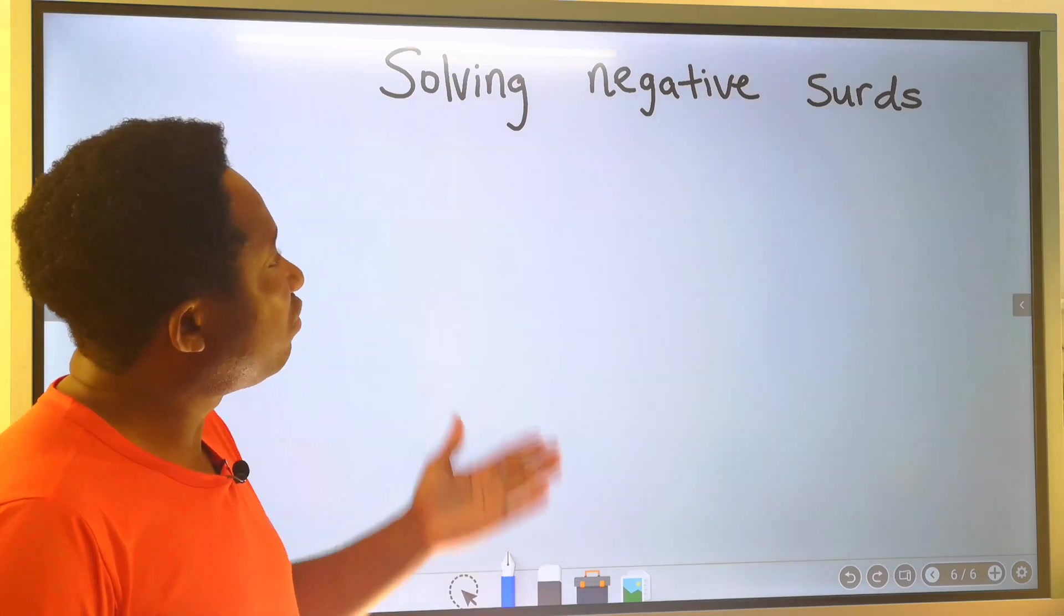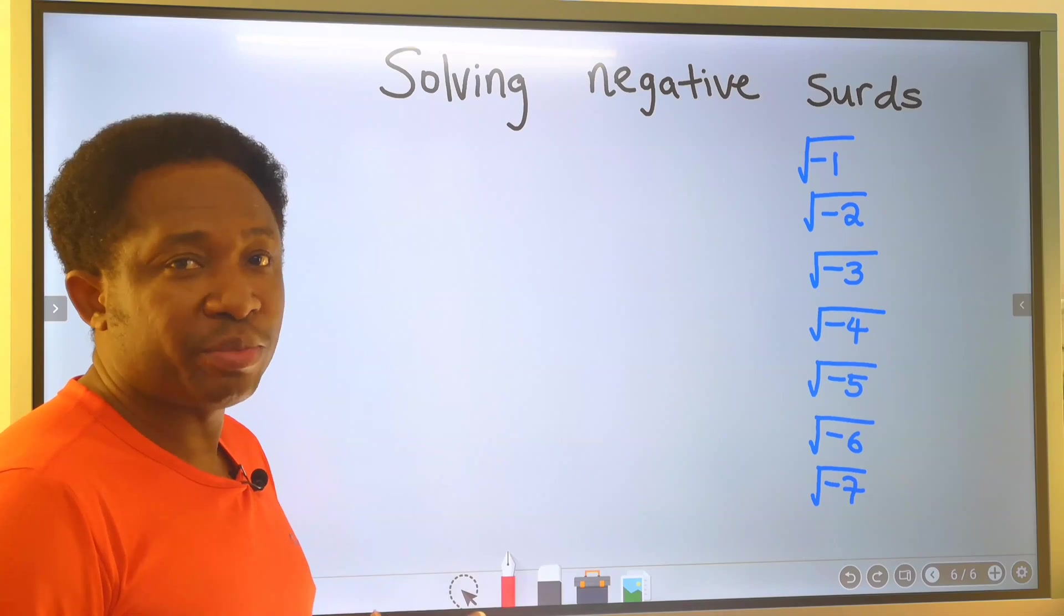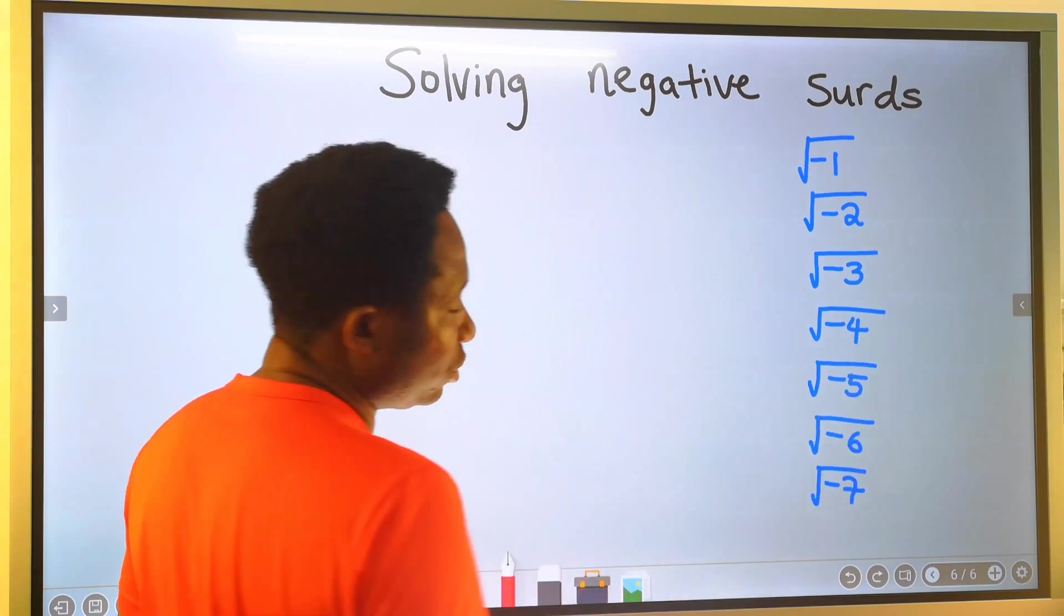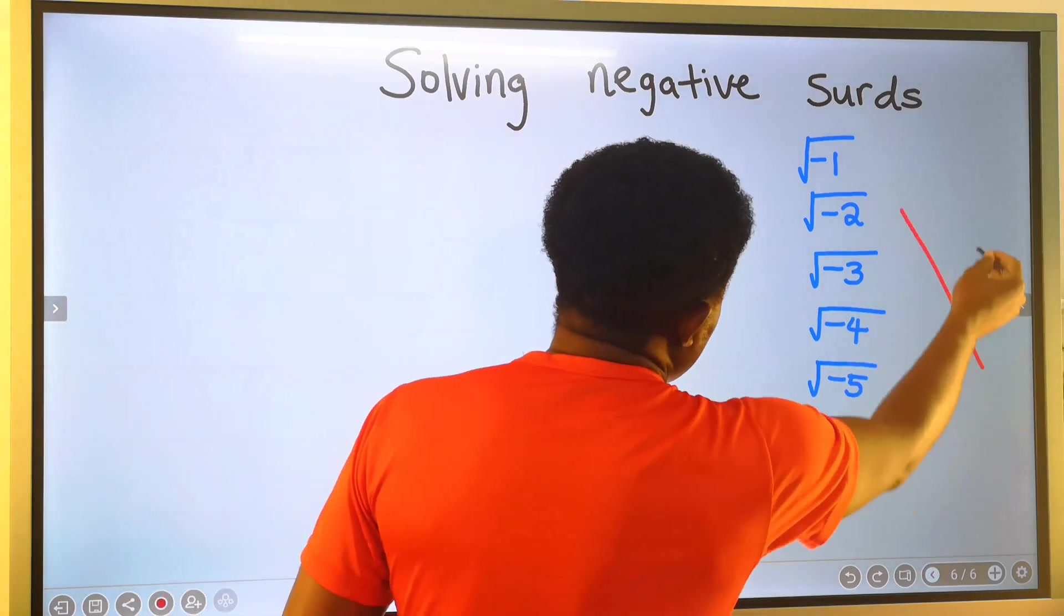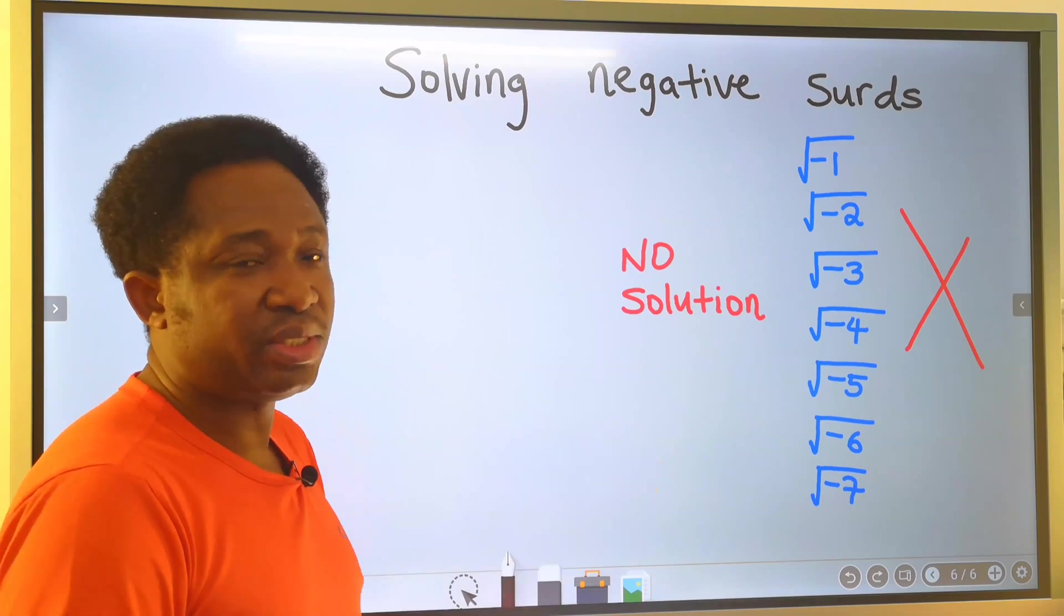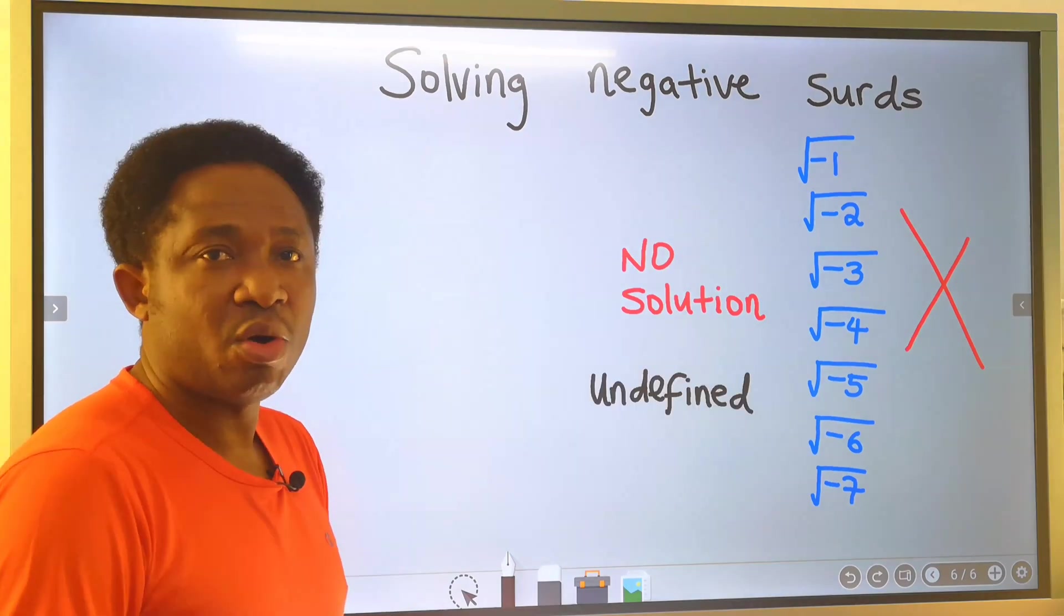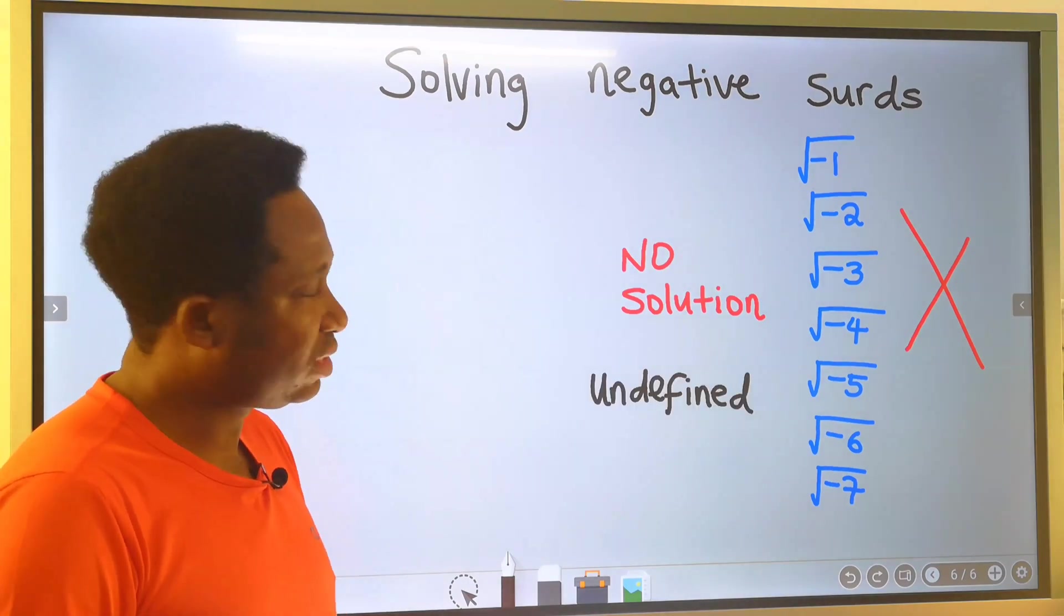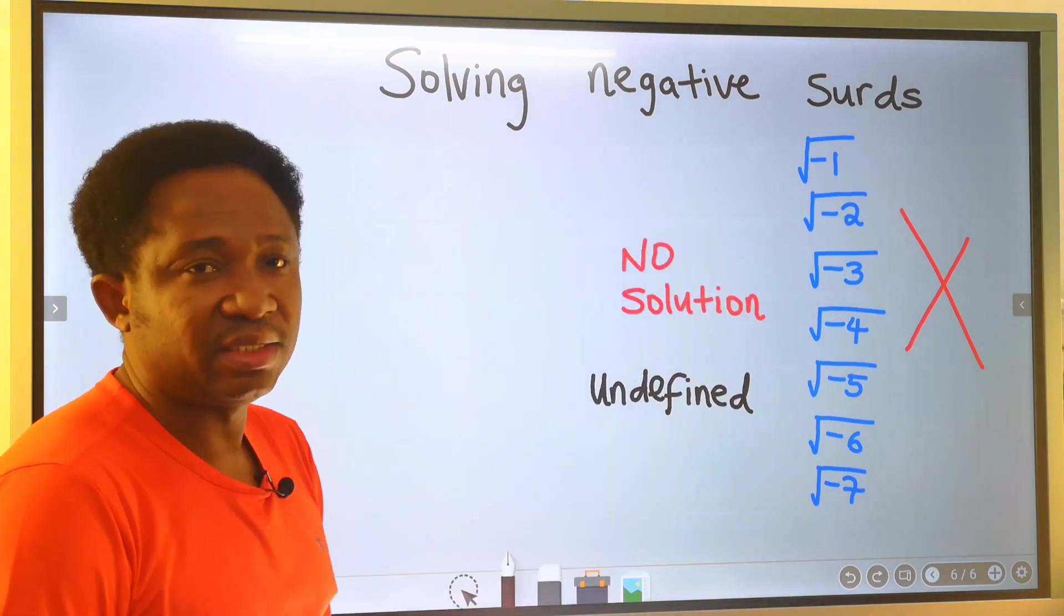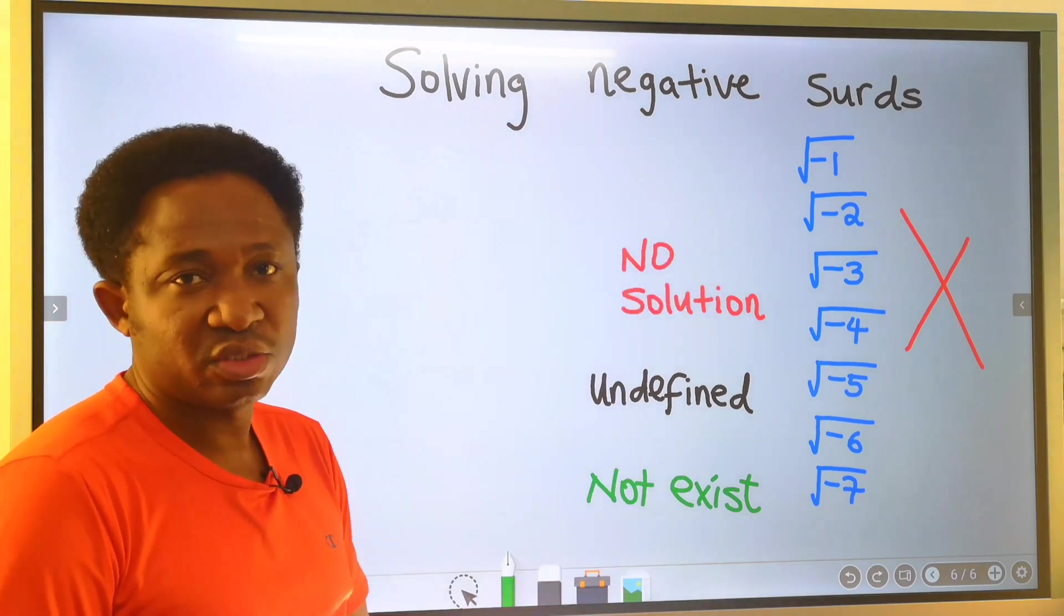Let's consider solving negative surds. In algebraic surds, a minus inside the square root is not allowed at this stage. We say this has no solution, or we can say it is undefined. These are undefined - negative surds do not exist.